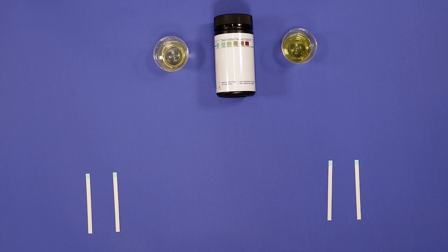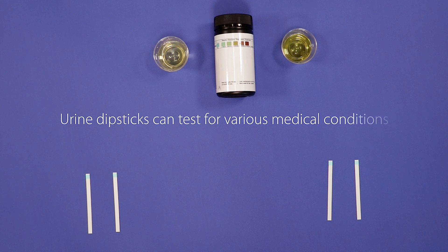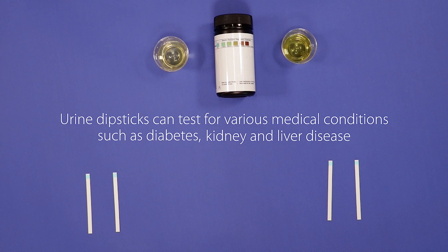Urine dipsticks are thin strips with 10 squares of special filter paper which can test for various medical conditions such as diabetes, kidney and liver disease once it's dipped into the urine.